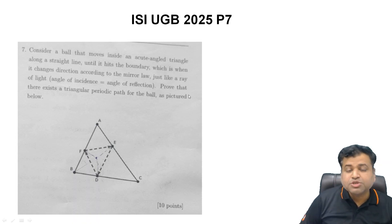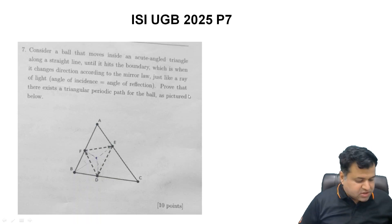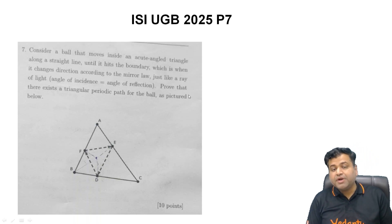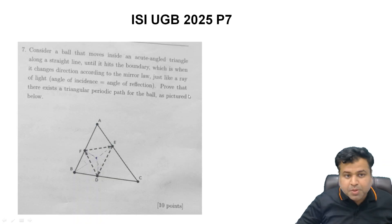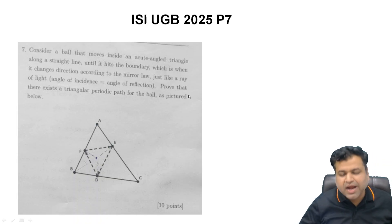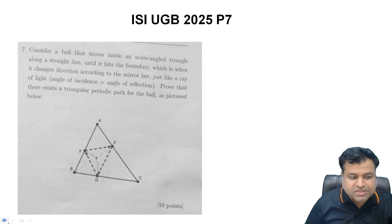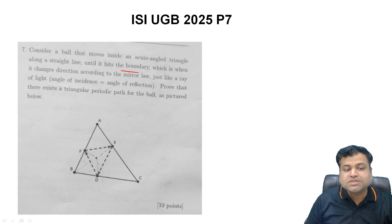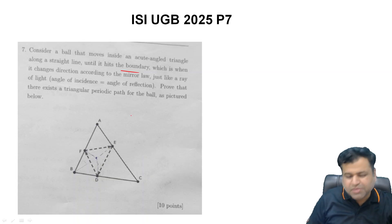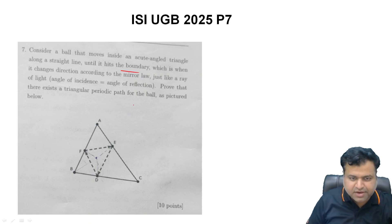Let's discuss ISI UCB 2025 Problem 7. The problem states: consider a ball that moves inside an acute angle triangle along a straight line until it hits the boundary, where it changes direction according to the mirror law — basically the ball gets reflected from the side of the triangle, just like a ray of light. We need to prove that there exists a triangular periodic path for the ball as pictured.